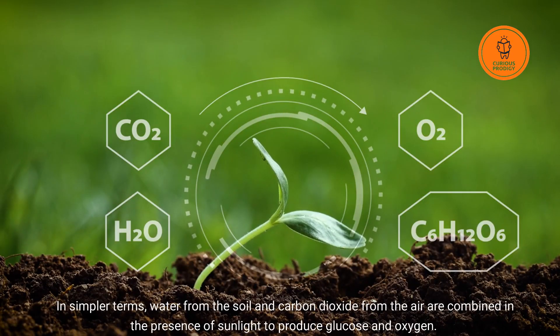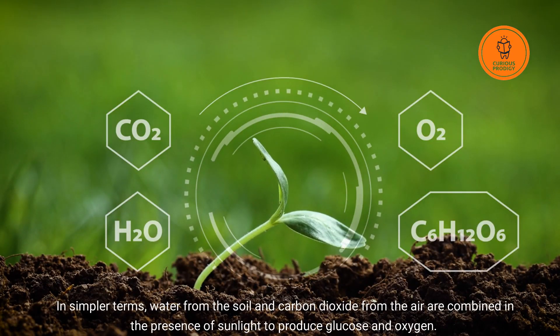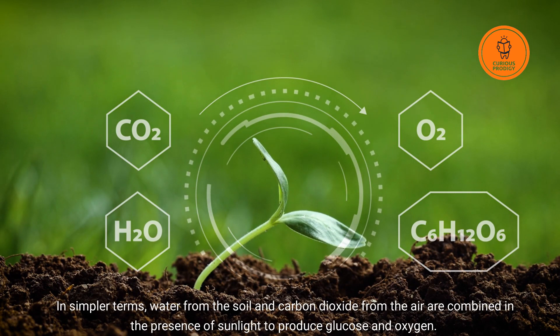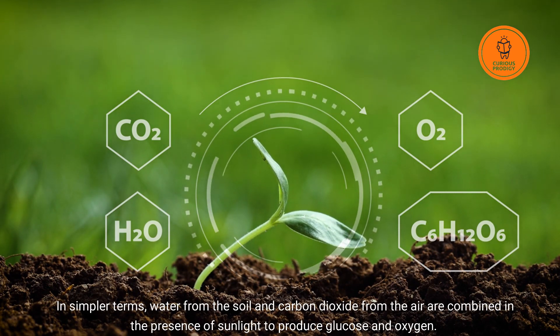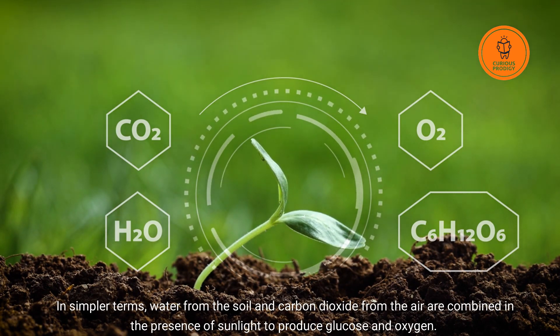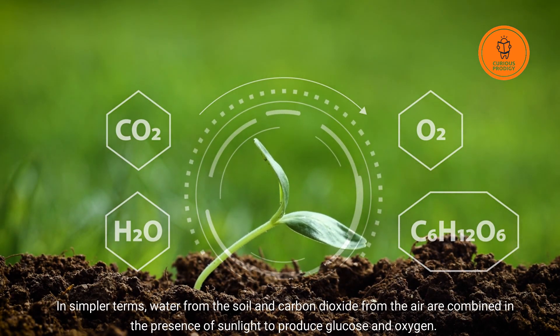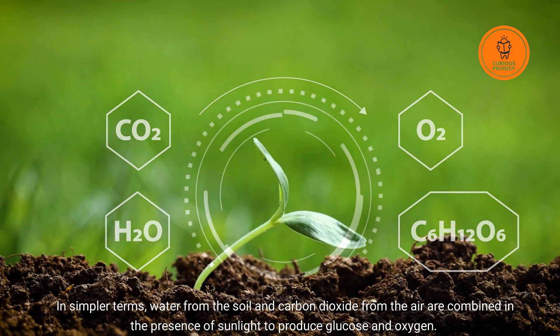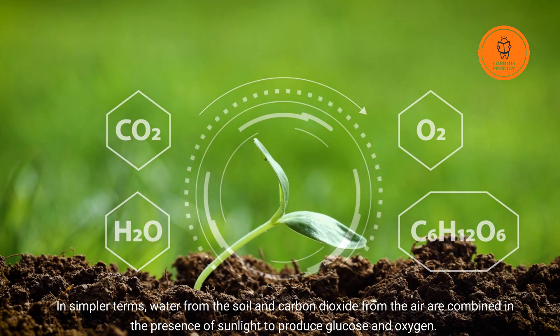In simpler terms, water from the soil and carbon dioxide from the air are combined in the presence of sunlight to produce glucose and oxygen.